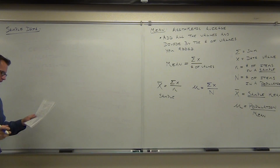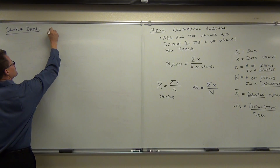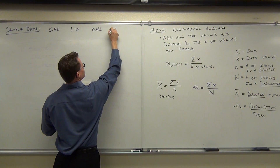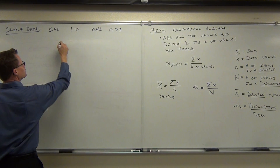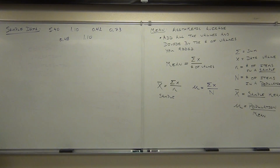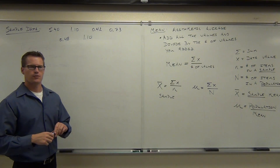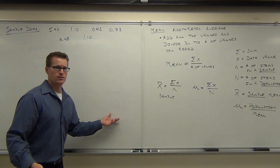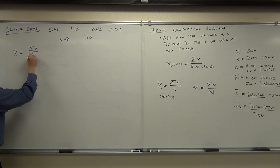So our sample data is this. Let's say this is the sample of every month you counted the changes in your car or something like that. Here's what you got: $5.40, $1.10, $0.42, $0.73, $0.48, and then another month you happened to have $1.10 again. So if we're talking about finding the mean, am I going to be using X-bar or am I going to be using Mew? Because I said sample data, that says we're going to be talking about X-bar.